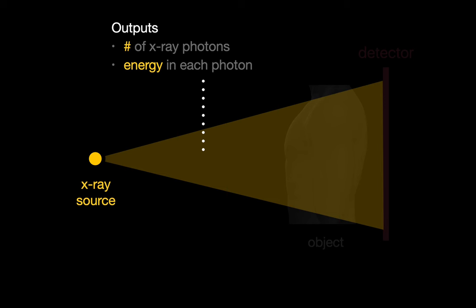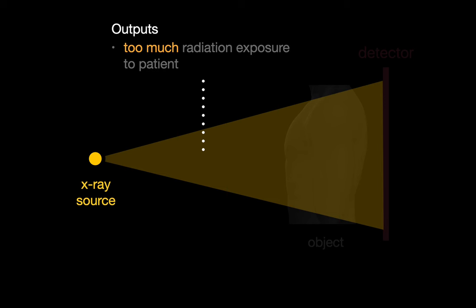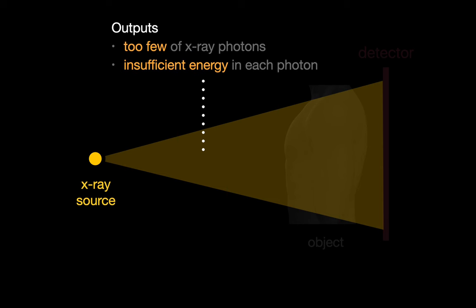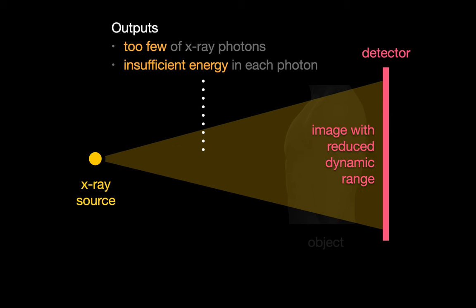Since not every patient is the same size, the optimal amount of current and voltage may vary from patient to patient and needs to be correctly selected. If we deliver too high a current or voltage to our x-ray tube, we may end up delivering too much radiation to our patient. While if we choose too low a current or voltage, we may get a noisy image since there's not enough x-ray photons to make our image with, or we may end up with an image with reduced dynamic range, which can make it hard to distinguish one anatomical structure apart from another on the chest x-ray.